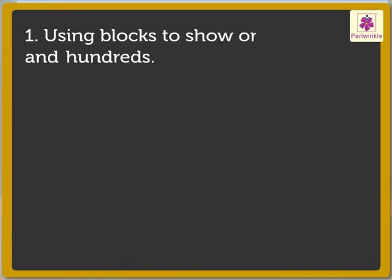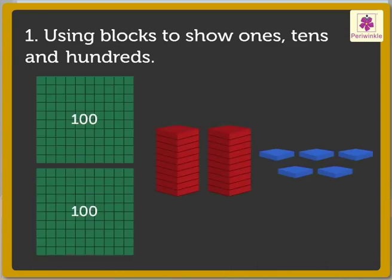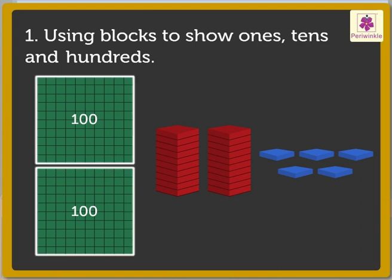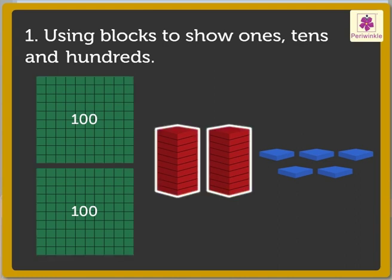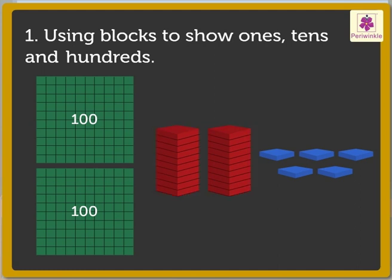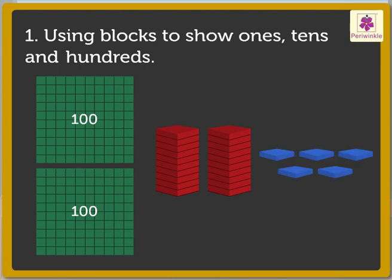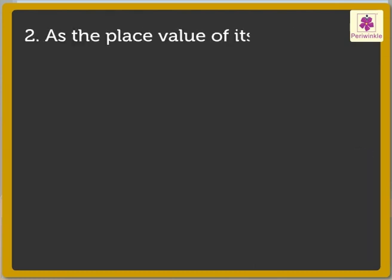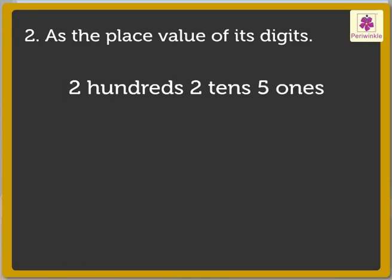Let us see the different ways to show the number 225. First, we can use blocks to show the 1s, 10s and 100s in the number. It can also be written as the place value of its digits: 2 hundreds, 2 tens, 5 ones.